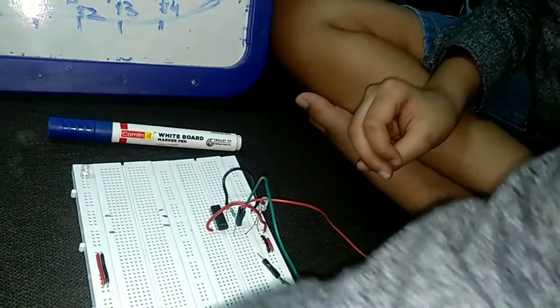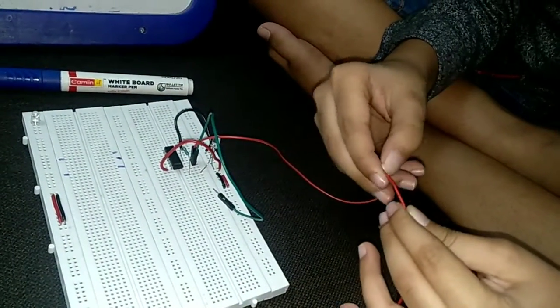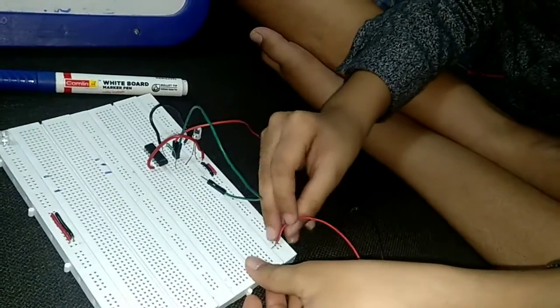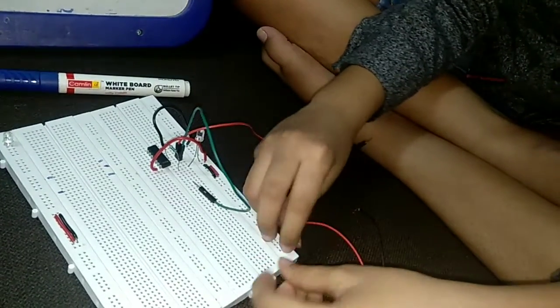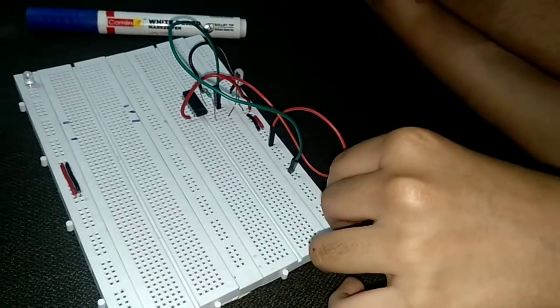Now the circuit is over. Let's connect this 9 volt battery. Let's connect it to negative.